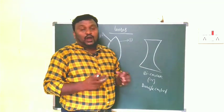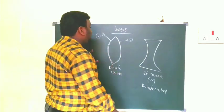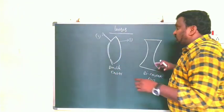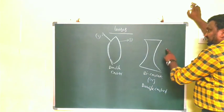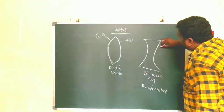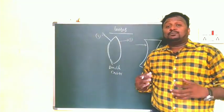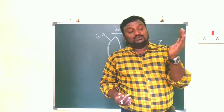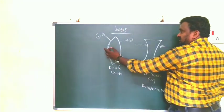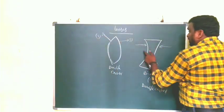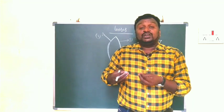Now observe the difference between a convex lens and a concave lens. In the case of a convex lens, the curved surface is outward on both sides. In the case of a concave lens, the curved surface is inward on both sides. If the curved surface is inward, that is concave; if outward, it is convex.